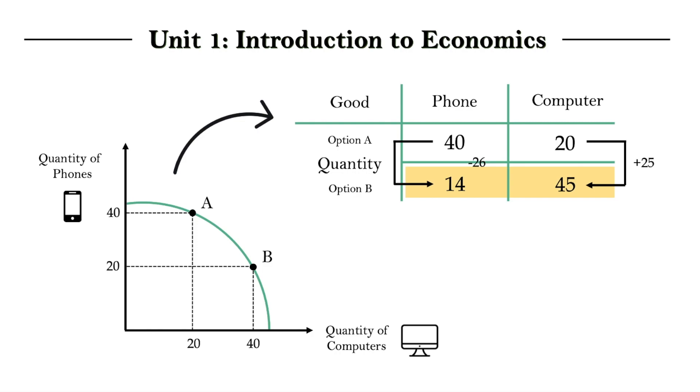So, the opportunity cost of going from option A to B is that for every computer we gained, and we gained 25 computers, we gave up 26 phones. So, we have given up 1.04 phones for every computer we gained. And this is how the PPC illustrates opportunity cost.